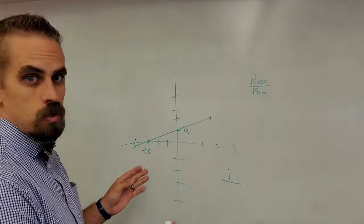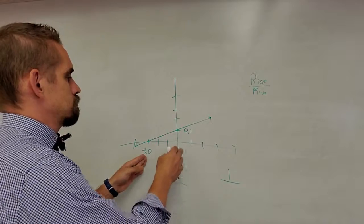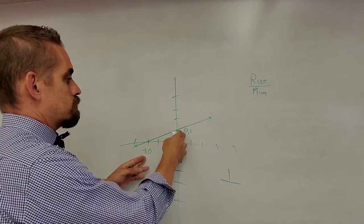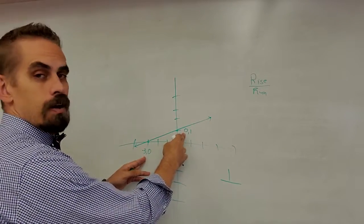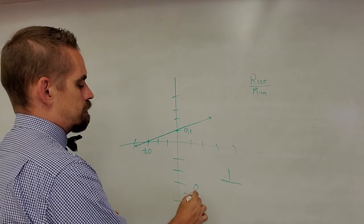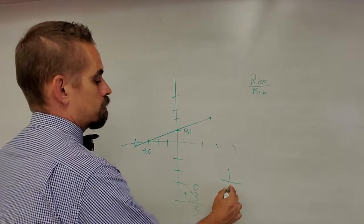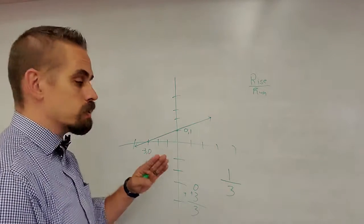And then the run. So you take your x value here, your x value here, and you subtract it by your x value here. So zero minus negative three. Two negatives would equal positive, and so three. One third. So that's my slope.